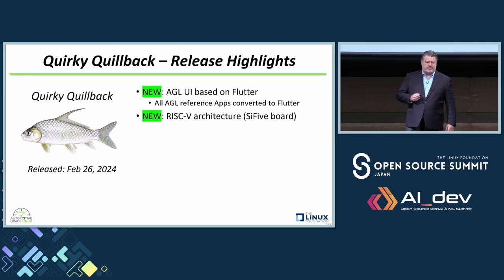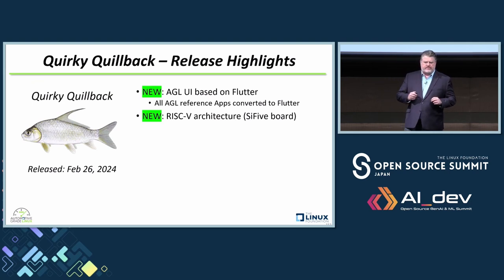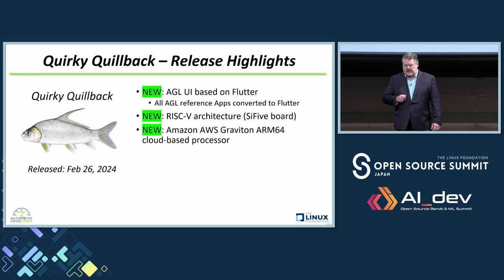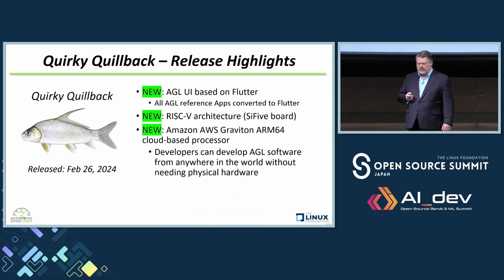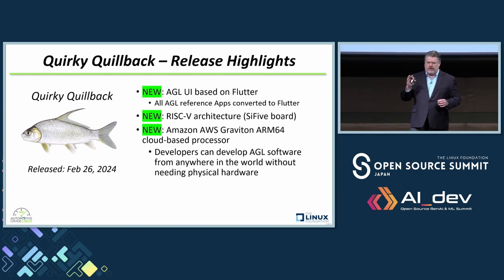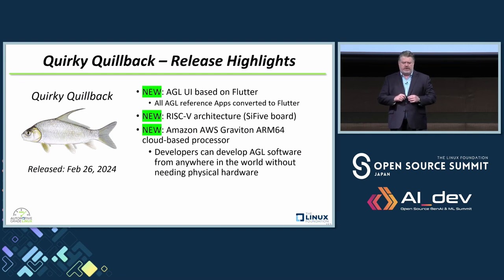We also introduced RISC-V support for the first time — we believe this is the first automotive-specific platform to support RISC-V architecture. We hope to see more boards from different manufacturers as RISC-V evolves. We also added support for Amazon AWS Graviton, an ARM64-based cloud processor. This means developers, especially community developers, can now write and test AGL software while sitting at a cafe with their laptop — connecting to the cloud without needing physical hardware. My colleague Jan Simon will be giving a talk about this later today.